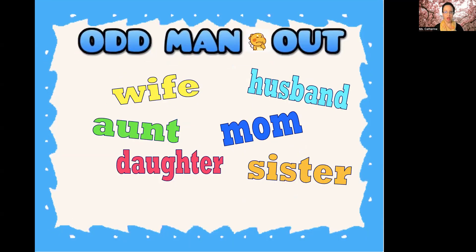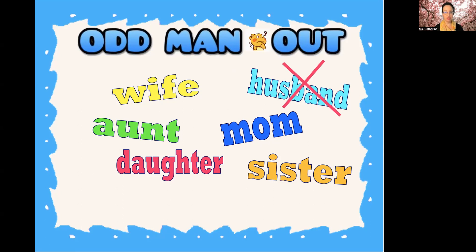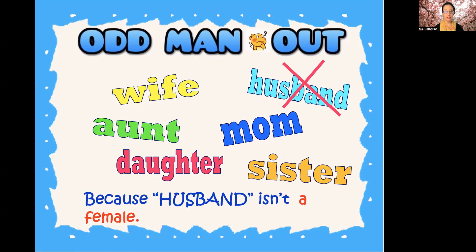Odd man out here. We have: wife, aunt, daughter, husband, mom, and sister. Which one is the odd man out? Husband. Why? Because husband isn't a female. The other ones are all females.